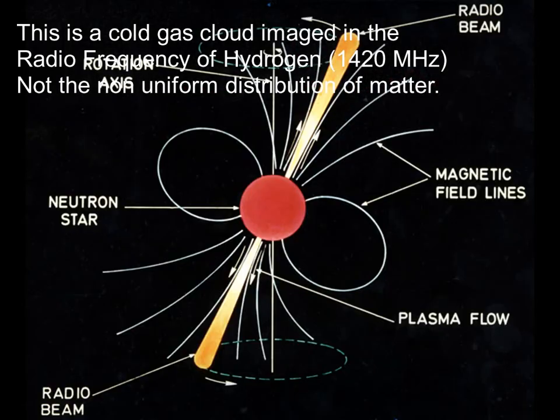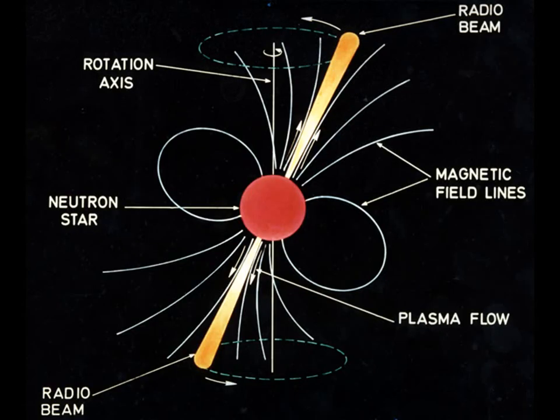They also can show us lighthouses that we would never have been able to see: pulsars. Pulsars are stars that have collapsed, and now they emit, because of their intense magnetic field, beams up and down of radio waves, and they rotate at a very precise frequency.